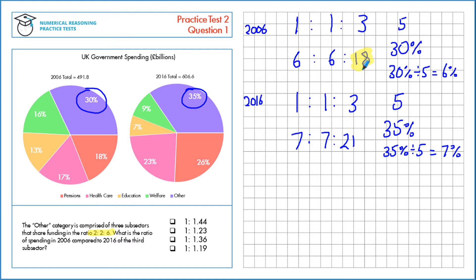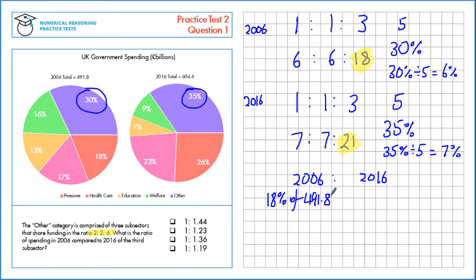So for our later calculations we're looking at 18% in 2006 and 21% in 2016. Now let's form the ratio — we've got 2006 spending to 2016 spending. In 2006 we know it's 18% of the total, which in this case is 491.8 million. In 2016 it's 21% of the total, which is 606.6 million.